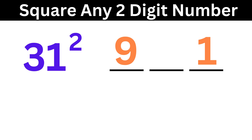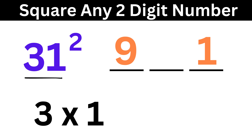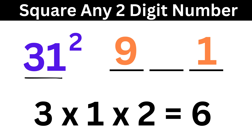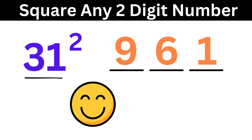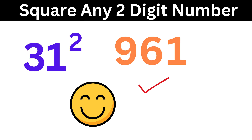Now for the middle part, multiply both of these digits together, and then multiply that product with 2, which gives 6. So put it here, and we are done. The final answer is 961. That was super fast, wasn't it?